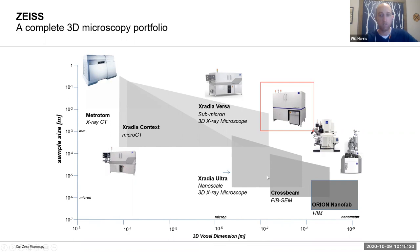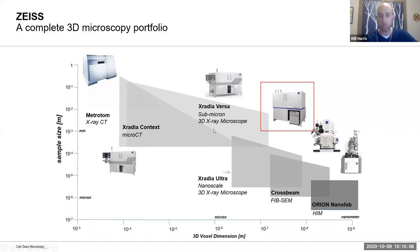X-ray instruments fit in a pretty nice gap — previously a gap — between the world's very high-resolution SEM, FIB-type imaging, FIB-SEMs, and what previously existed as just large-scale industrial CT: instruments meant for looking at things like engine blocks of cars at coarse length scales for industrial purposes. XRM instruments fit in the middle, on the boundary of the micro and nano worlds, dealing with samples anywhere from centimeters all the way down to microns in size.